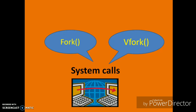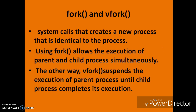The fork system call always creates a child, denoted as zero, and the parent itself, denoted by one. These are unique system calls. Using the vfork system call we can allow the execution of the parent as well as the child process simultaneously. This system call creates a new process which is identical to the parent process.